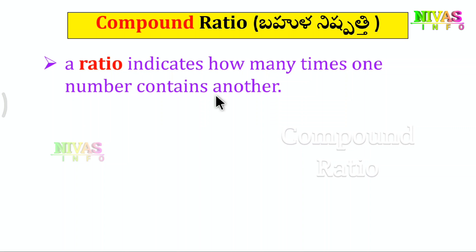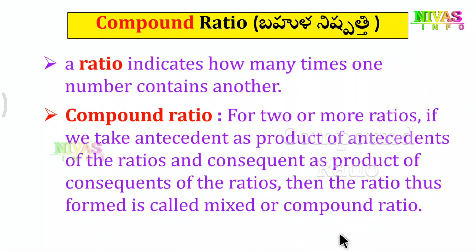The relation between two numbers tells us how many times one number is compared to the other. We want to know that Compound Ratio involves term multiplication.